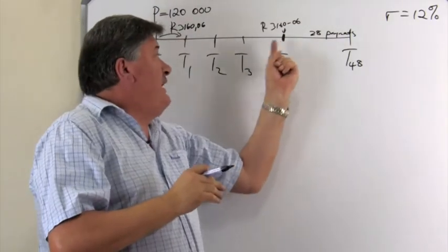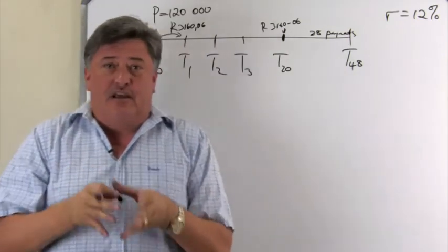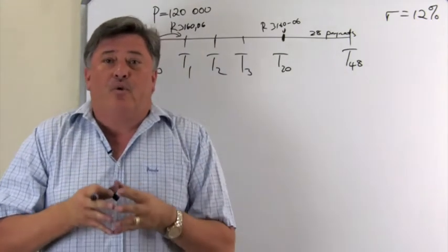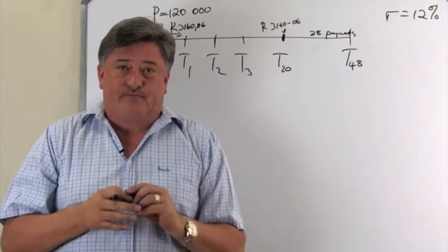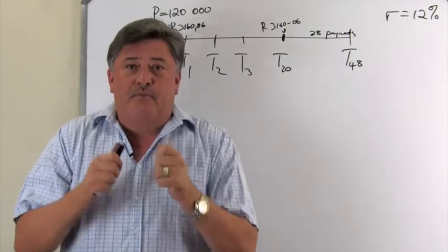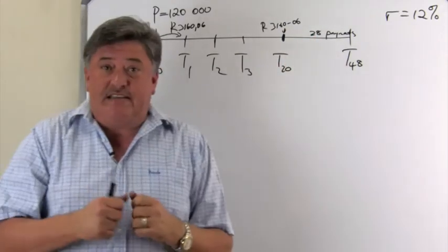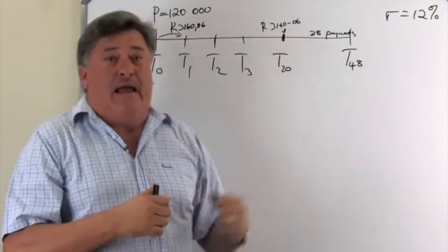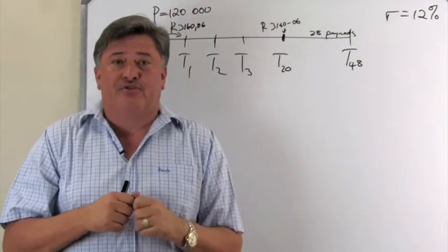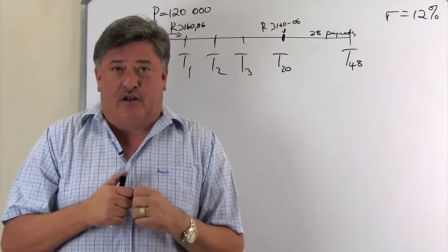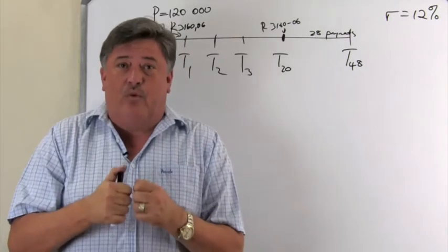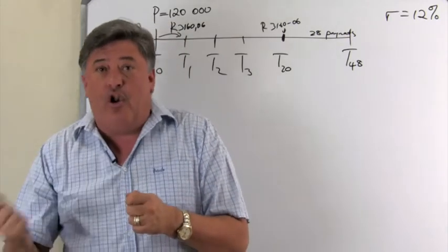So you will agree with me, there are still 28 payments left here over this period. But she don't want to make those payments anymore. She wants, after she made this 20th payment, she asked the bank, what do I still owe you? Now, the confusion is that many people think, okay, she still owes 28 payments of that amount. And they multiply the two and they say, this is what she still owes, which in a way is true.